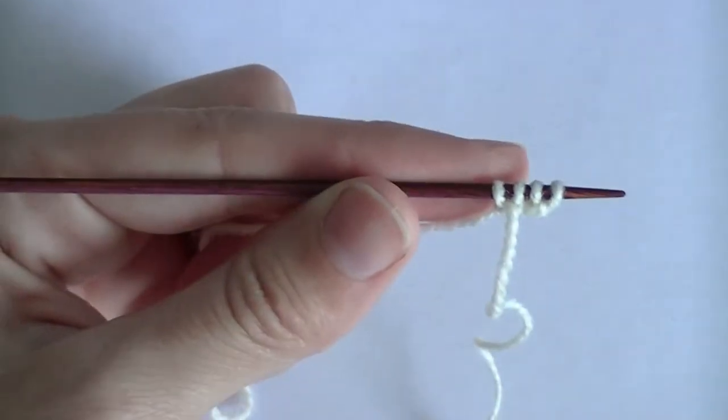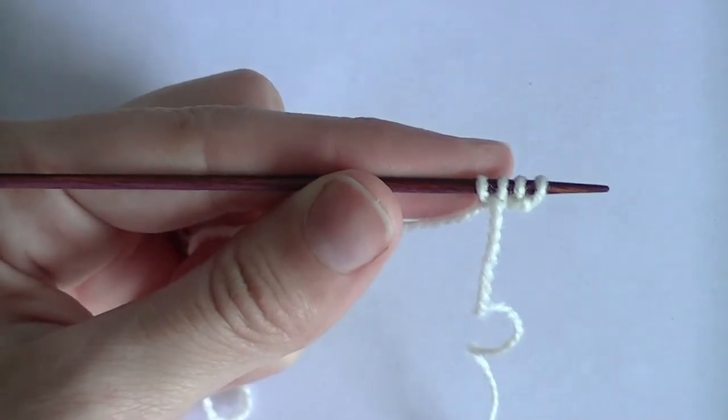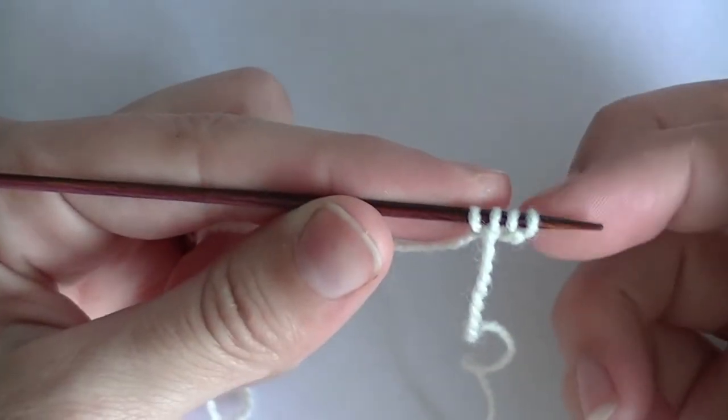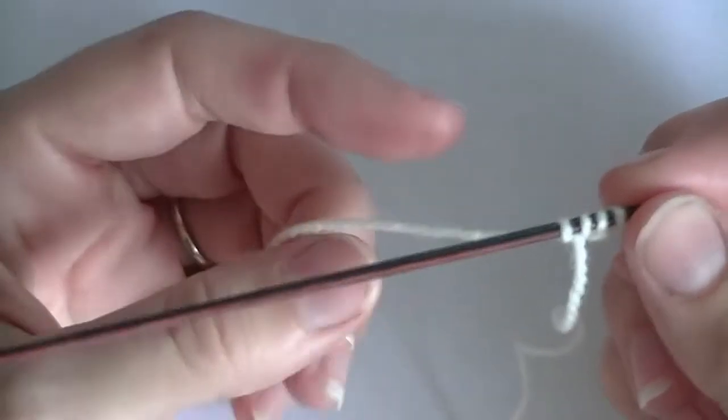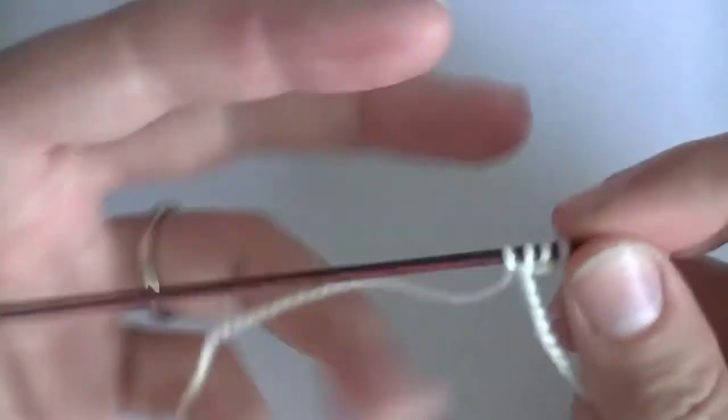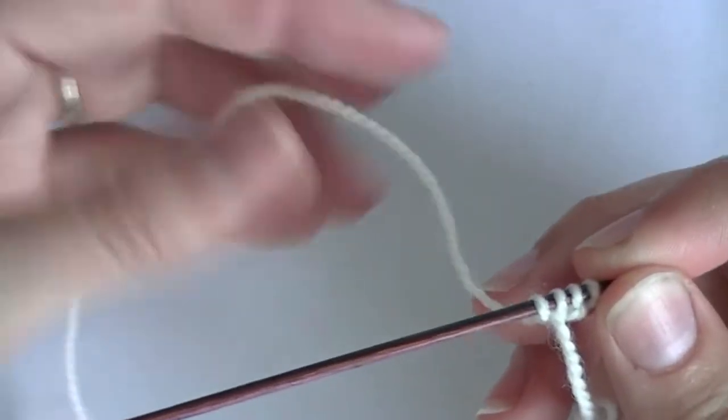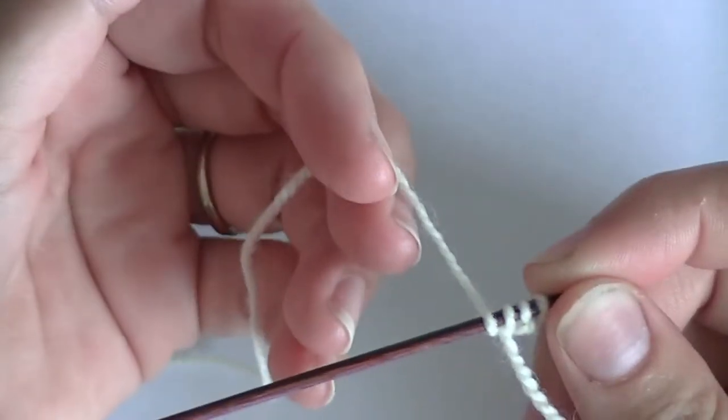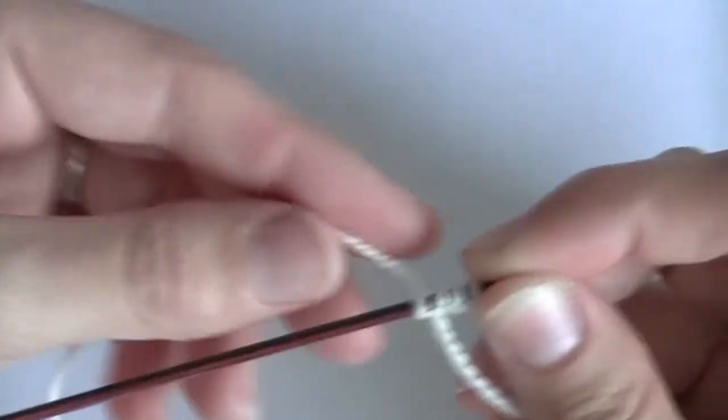And you're going to have your tail and your working yarn now on the left side. And this might look a little bit unusual because normally we're working with our working yarn coming here on the right side. But this is how you have to do it for an I-Cord. So you want to make sure you have your working yarn in your hand that you like to throw or however you knit.